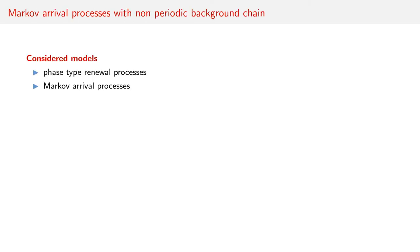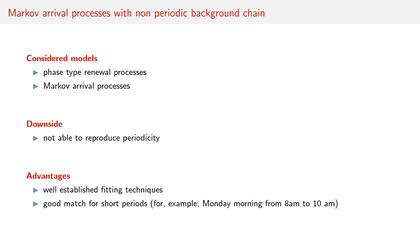At first, we considered Markov arrival processes with a non-periodic background chain, such as phase-type renewal processes and Markov arrival processes. These families of models are not able to reproduce periodicity. They come, however, with well-established fitting techniques and provide a good match for short periods, for example Monday morning from 8 am to 10 am.